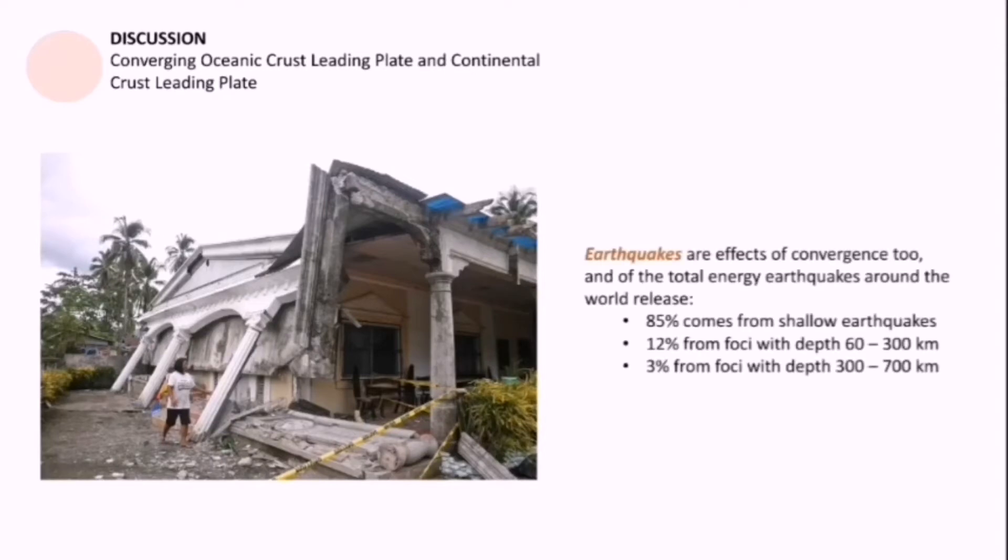One of the things that are going to happen because of the convergence of these two plates are earthquakes. And the total energy of all of the earthquakes around the world, 85% of them come from shallow earthquakes. They're not really coming from deep focus or epicenter. 12% of them are coming from earthquakes with a focal depth of 60 to 300 kilometers. And lastly, 3% of them have a focal depth of 300 to 700 kilometers.